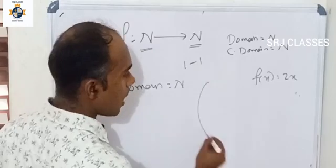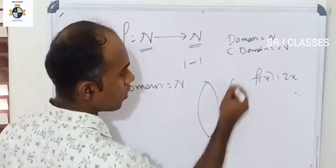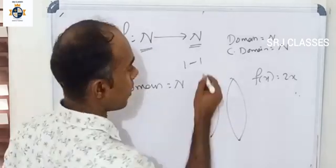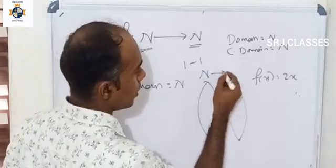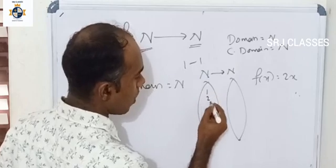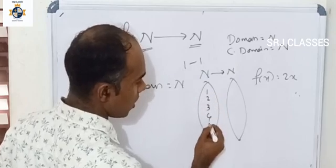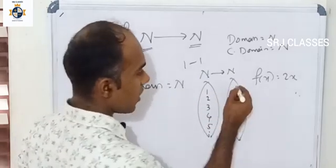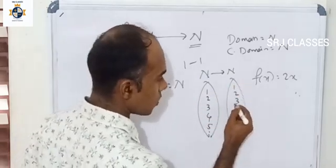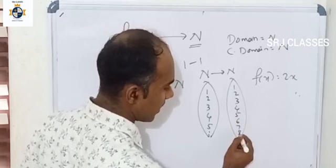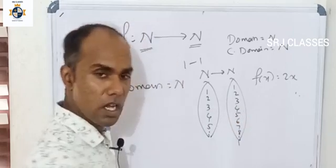We can use a Venn diagram to illustrate this. We have set {1, 2, 3, 4, 5...} and another set {1, 2, 3, 4, 5, 6, 7, 8...}.